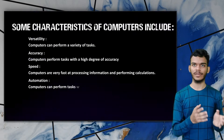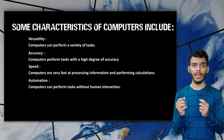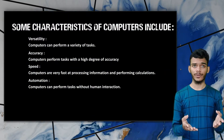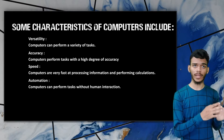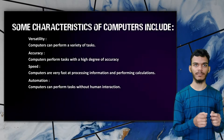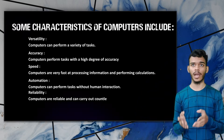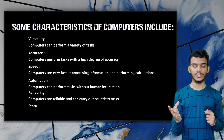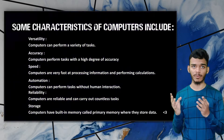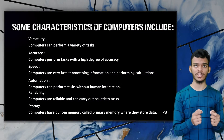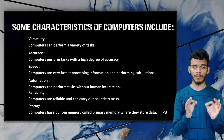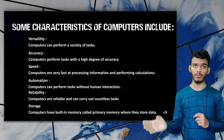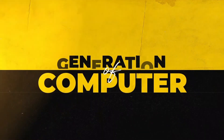Automation — a computer can perform tasks without any human interaction; we can give tasks to the computer and it performs on its own. Reliability — computers are very reliable and can carry out countless tasks at a time. Storage — computers have built-in memory storage called primary storage, where they store data for a particular moment in DRAM, also known as RAM, to process.